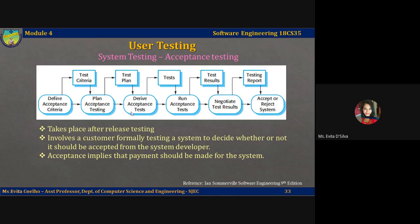The next phase is derive acceptance tests. Once acceptance criteria have been established, tests have to be designed to check whether or not a system is acceptable. Acceptance tests should aim to test both the functional and non-functional characteristics of the system and ideally provide complete coverage of the system requirements. In practice, it is difficult to establish completely objective acceptance criteria, and there is often scope for argument about whether a criterion has been definitively met.